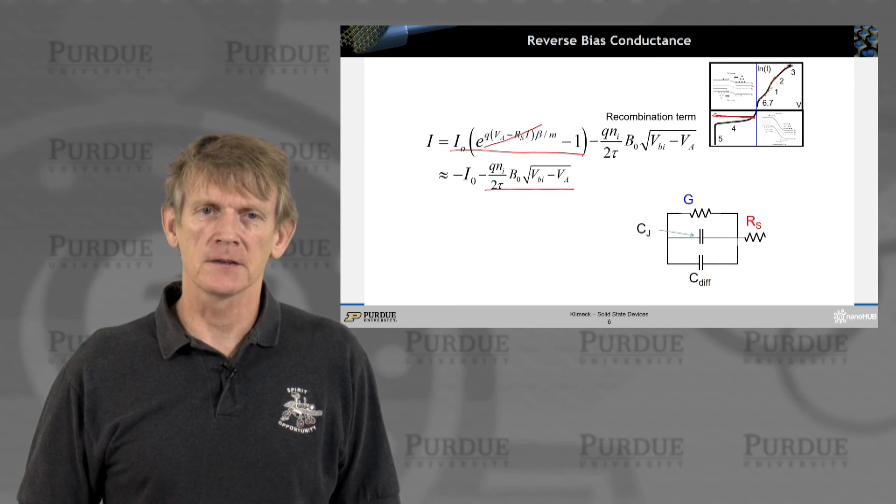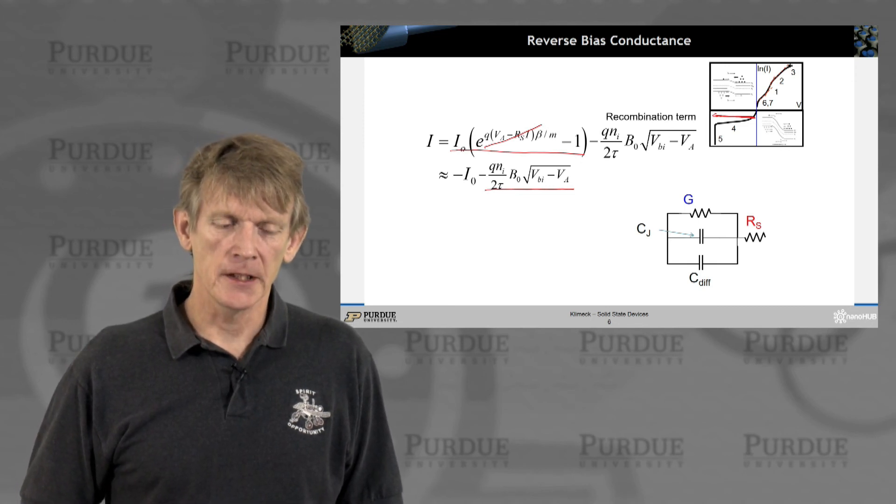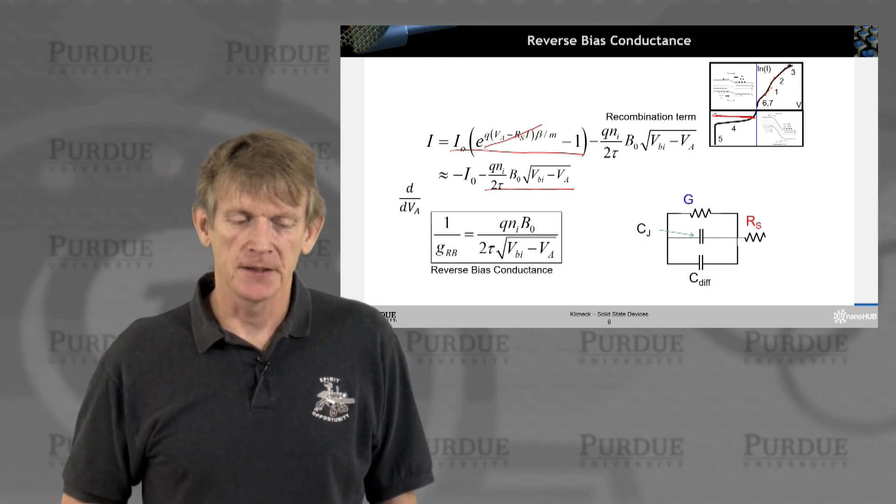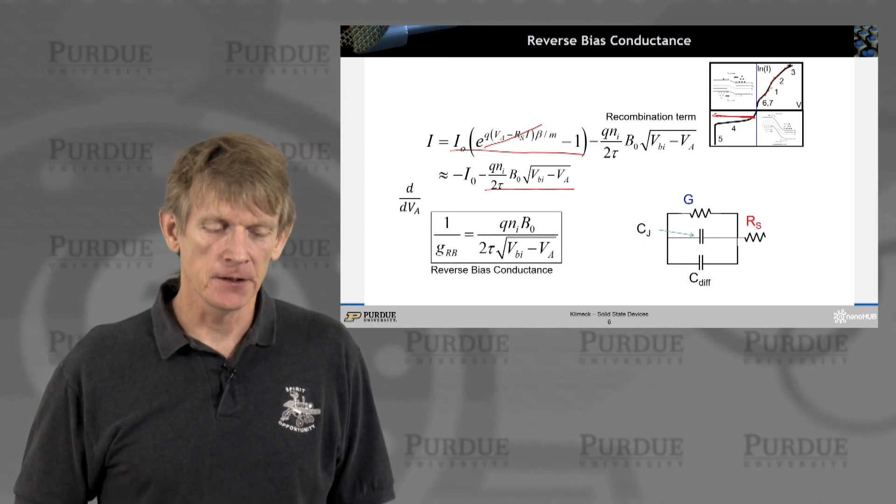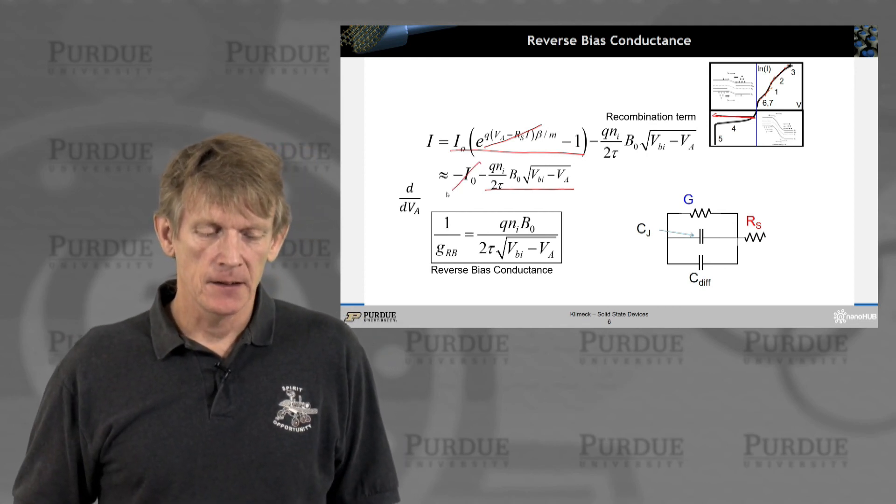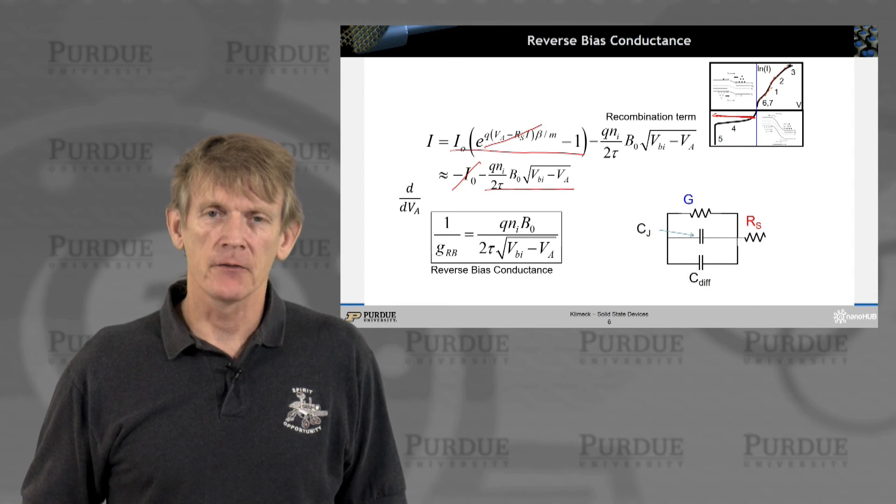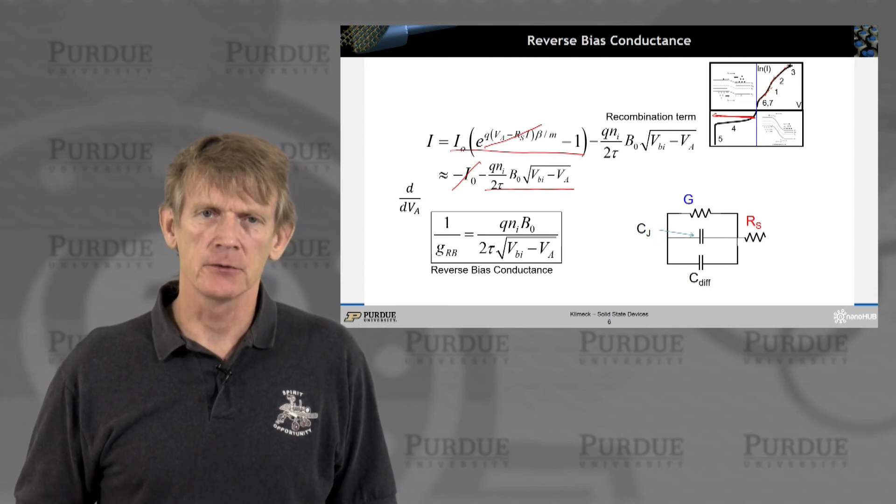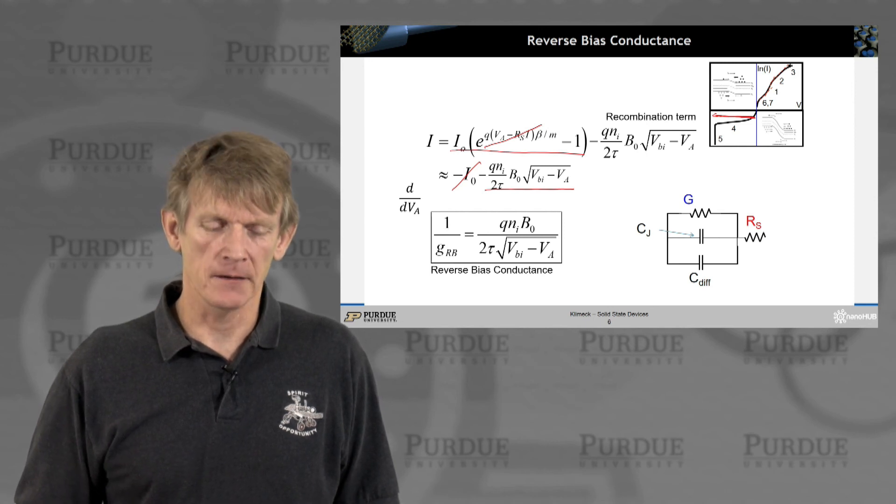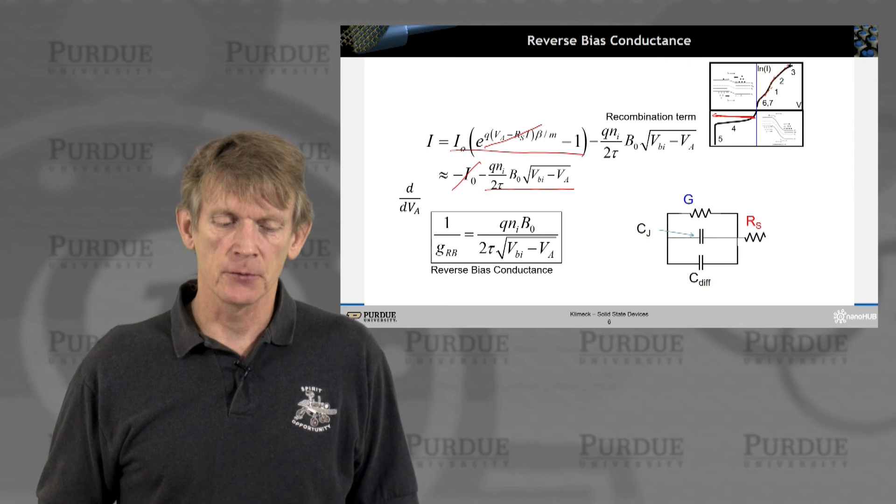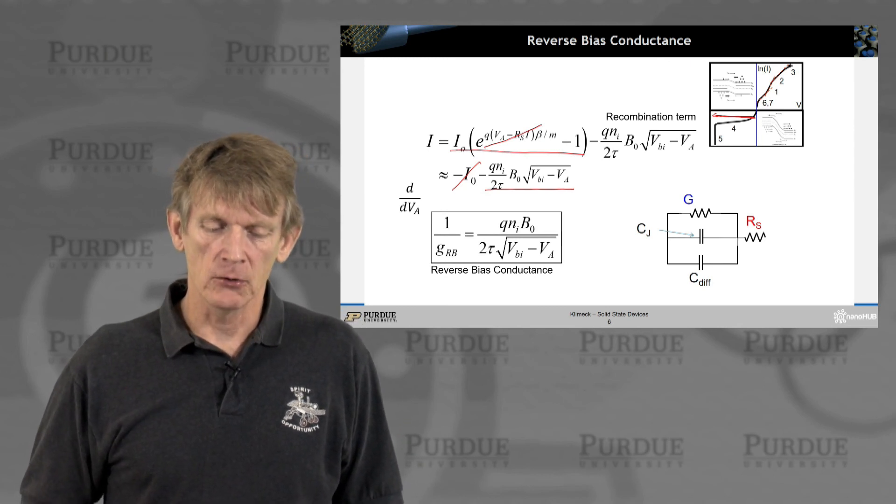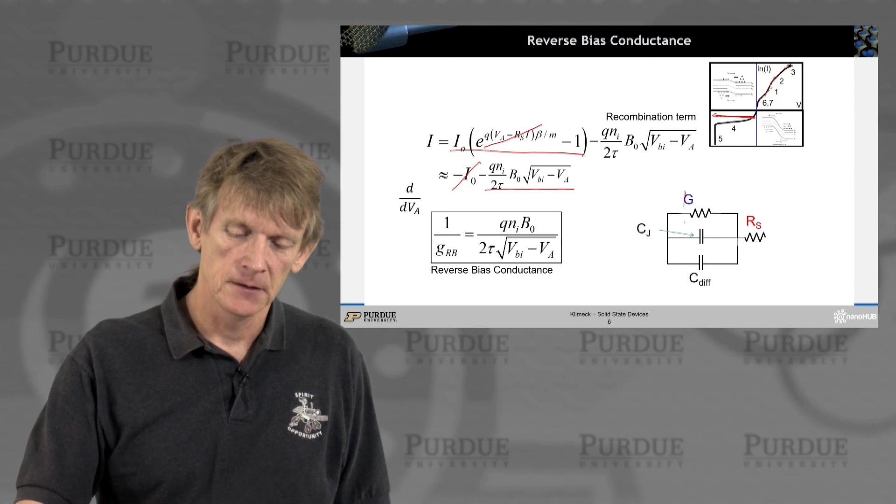Instead of this conductance being a constant, you now have a voltage dependent term built in here. Now we're going to take the differential with the applied voltage. Obviously the I₀ disappears, and we end up with a term that is one over the square root. If you differentiate a square root, you go from exponent one half to exponent minus one half, so you go as one over the square root. This should be all rather familiar to you.